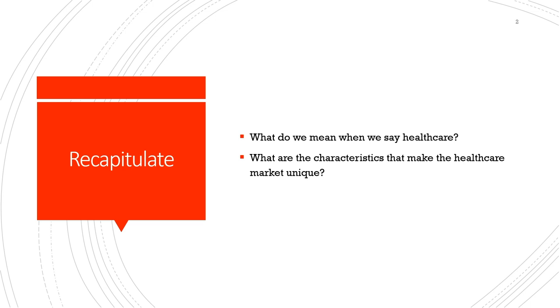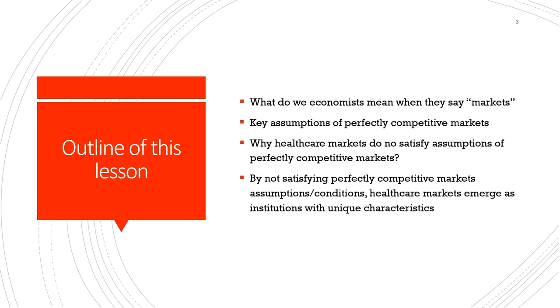We will take the question of unique characteristics of the healthcare market a little further, expanding the analysis by understanding how economists understand these markets. Today's outline covers: what economists mean by markets, the key assumptions of perfectly competitive markets, why healthcare markets do not satisfy those assumptions, and how by not satisfying these conditions, healthcare markets emerge as institutions with very unique characteristics.